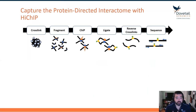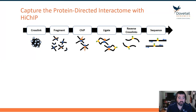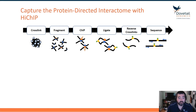Hi-CHIP is that protein-directed interactome. As I mentioned in the core workflow, it starts with cross-linked cells, then we perform fragmentation — we use MNase to do this. Then we conduct chromatin immunoprecipitation with our antibodies, and then perform proximity ligation to make those chimeric molecules reflecting long-range information.